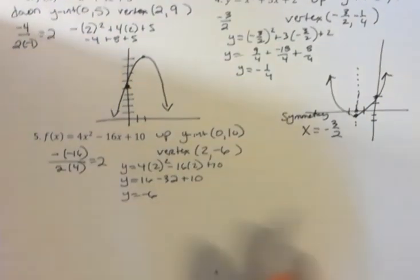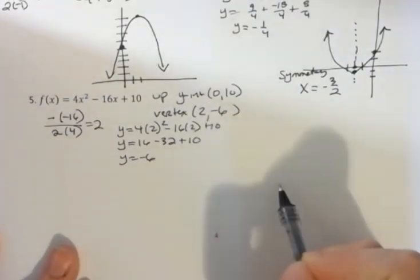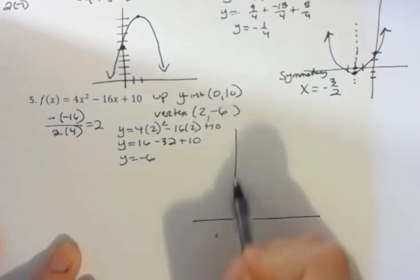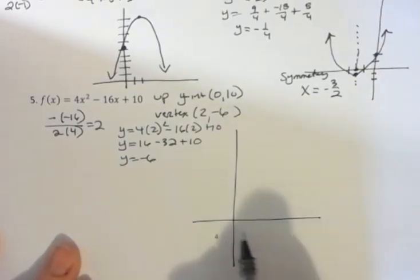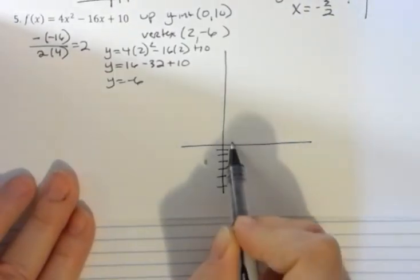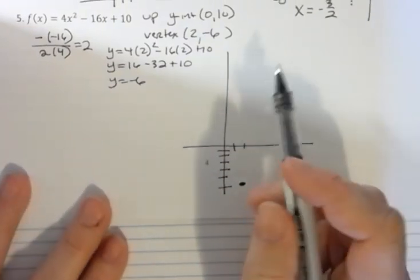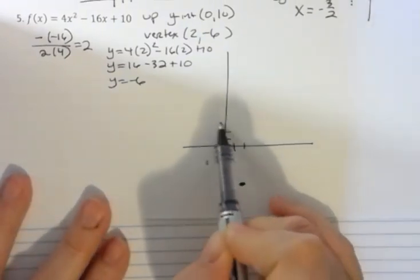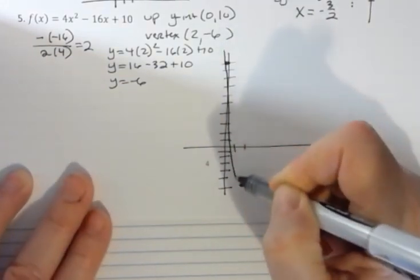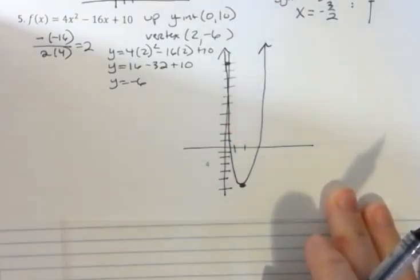Then I'm going to go back and draw that. My vertex is at 2 negative 6, which is down here and it goes up. So let's draw this. Marking the axes, here's (2, negative 6). My y intercept, though, is at 10. So my rough sketch is a very long and skinny looking parabola like that.